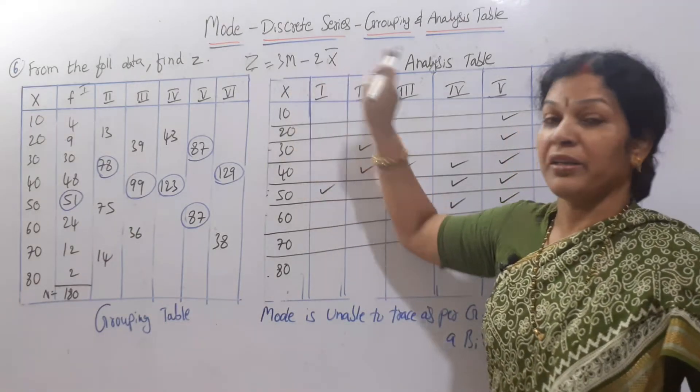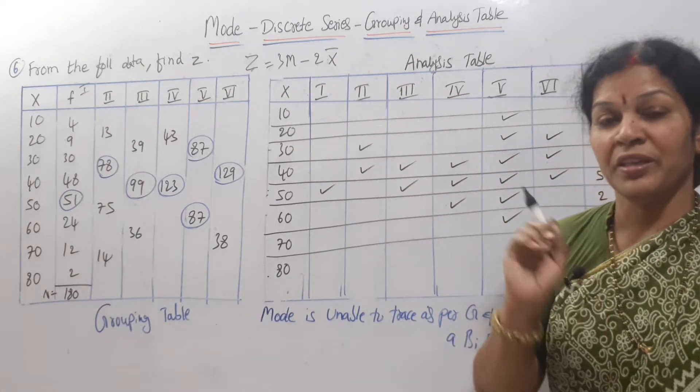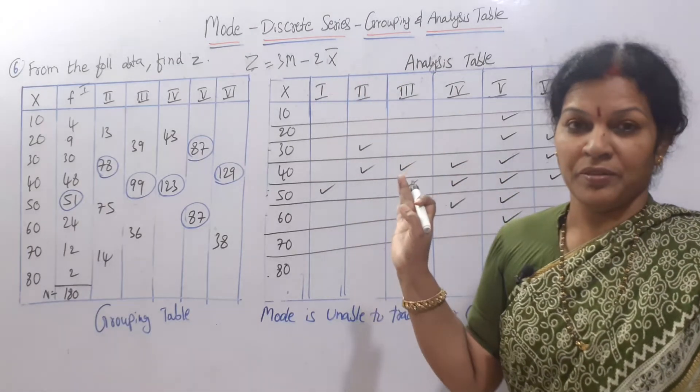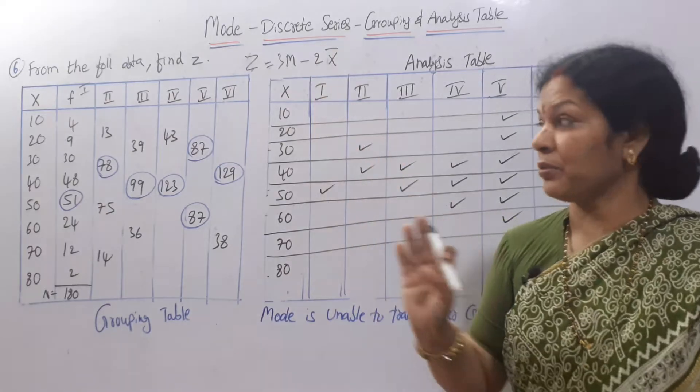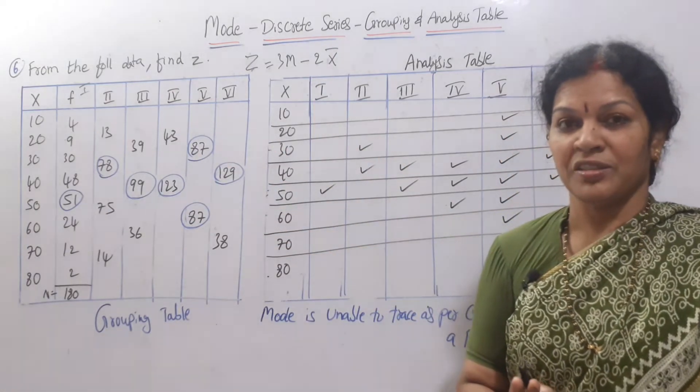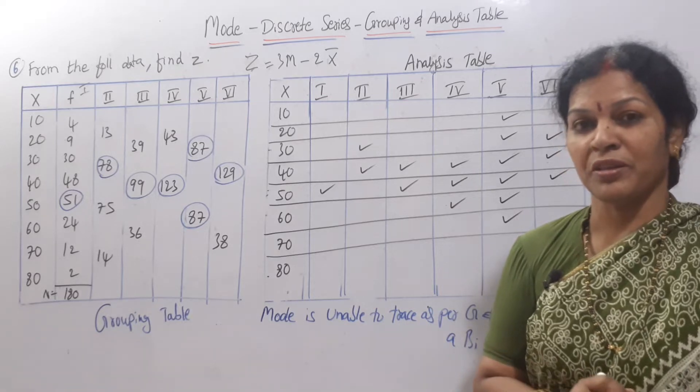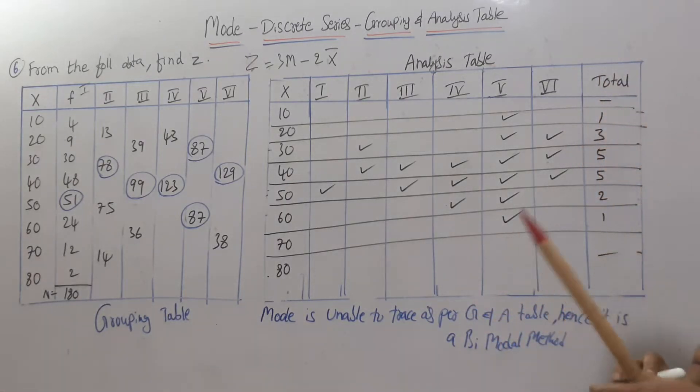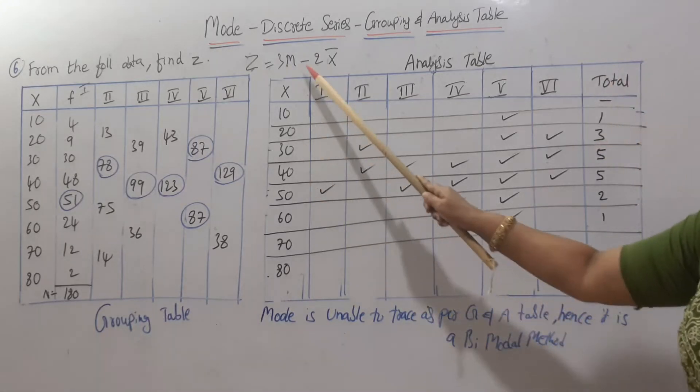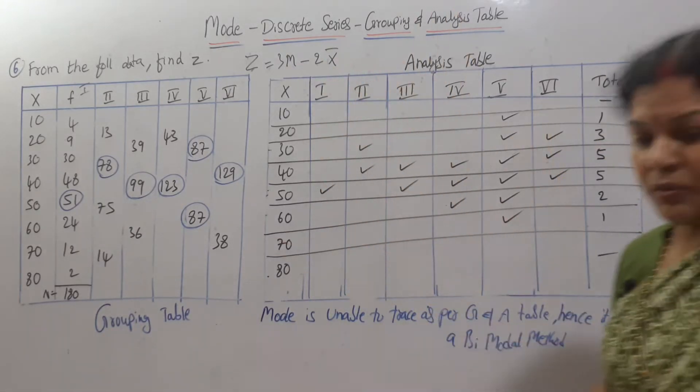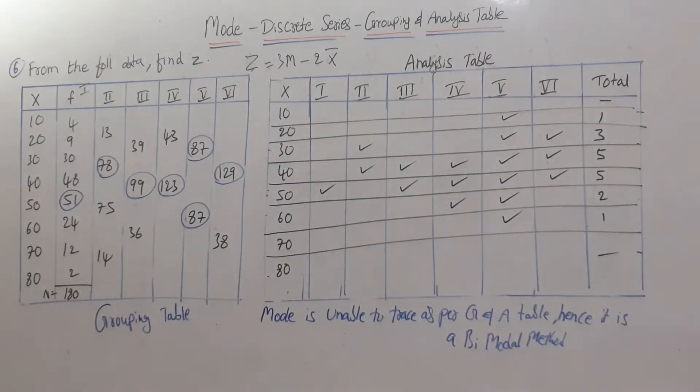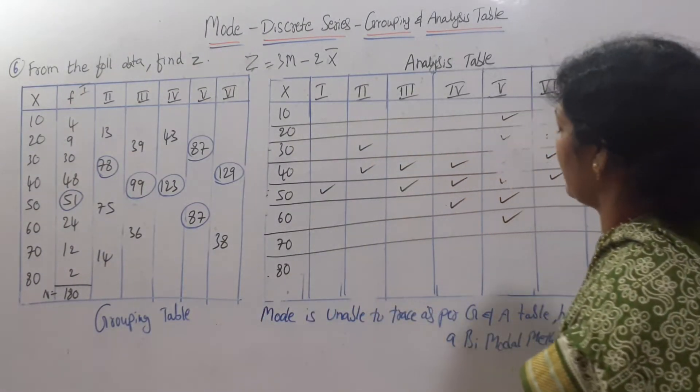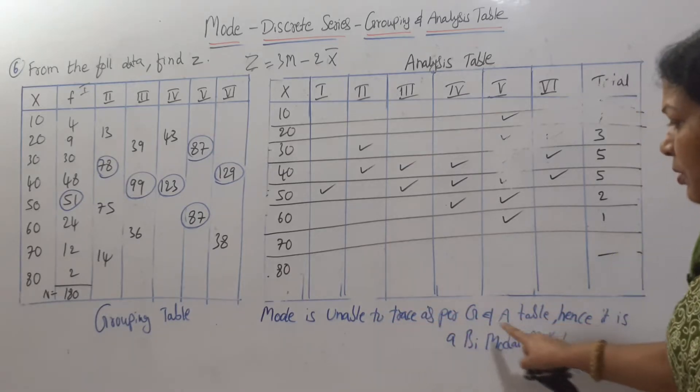Remember this formula, 3 median minus 2 mean. Means we have to find out the median and mean, x bar and median. Both we have to find out. What is the series? Discrete series. Do you remember how to find out the x bar and median? Should I clean this area to find out median and x bar? Have you noted? If you want you can note down. Take a screenshot. I will clean this part. You have to write this: mode is unable to trace as per the grouping analysis table, hence it is a bimodal method.